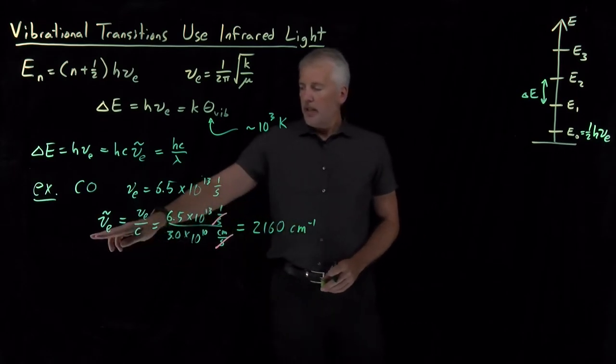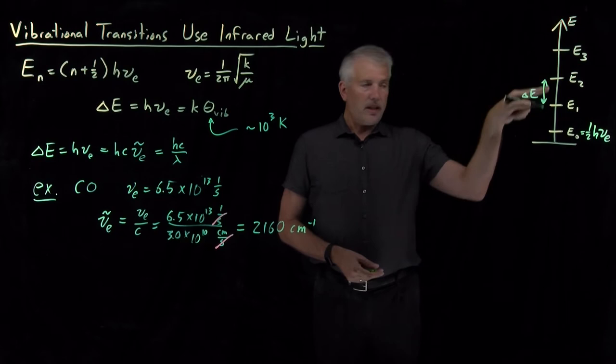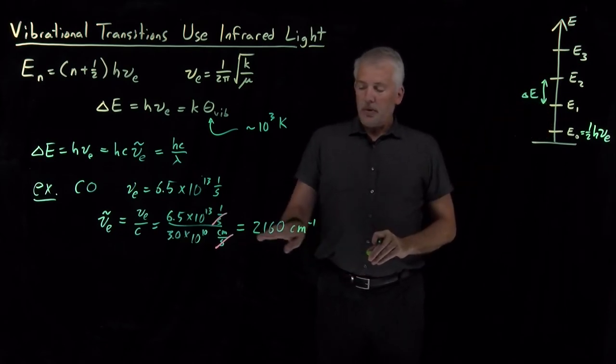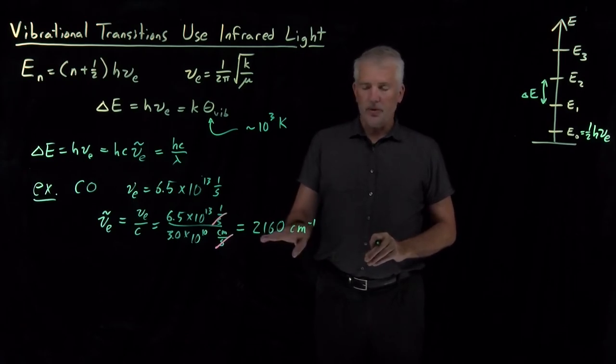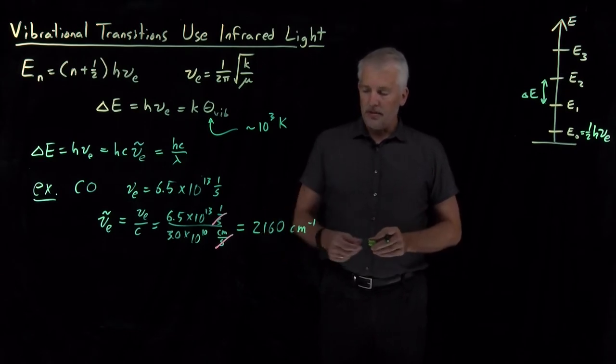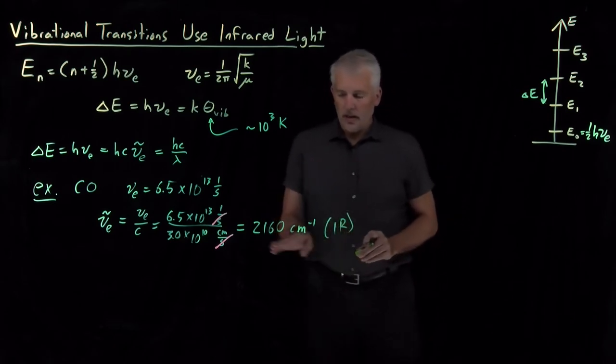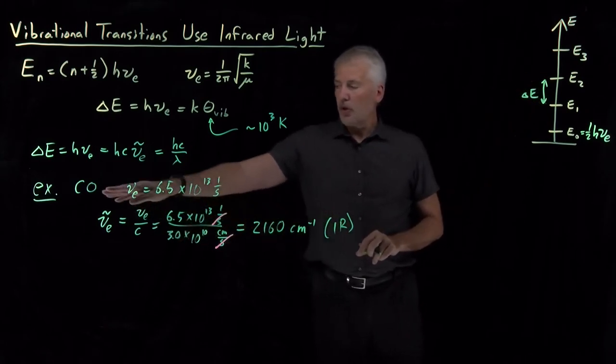And we find that the light needed to excite a transition from this state to this state, or from this state to this state, between any adjacent pair of states, has a wavenumber of 2160 inverse centimeters. So, if you think back to or remember the discussion about the different portions of the electromagnetic spectrum, that falls squarely in the middle of the infrared portion of the spectrum. So, this is infrared light of this wavenumber needed to excite this particular vibrational transition for carbon monoxide.